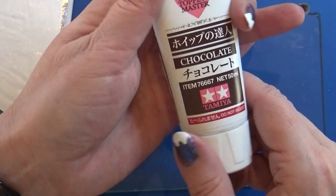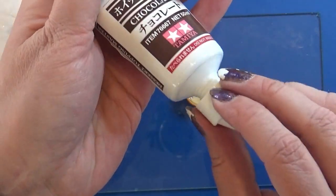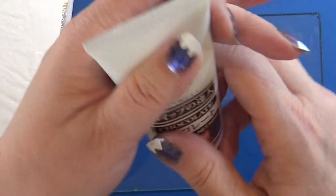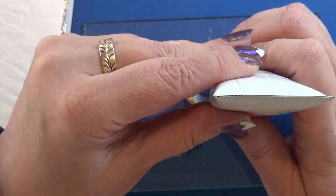I have this Dessert Topping Master in a chocolate version and I'm going to use that for some whipped cream on the cake.